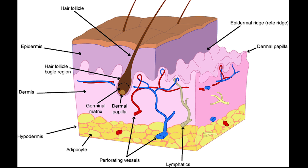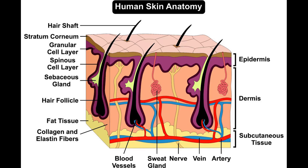The epidermis can be further subdivided into the following strata, or layers, beginning with the outermost: stratum corneum; stratum lucidum, found only in palms and soles; stratum granulosum; stratum spinosum; and stratum basale, also called the stratum germinativum. Keratinocytes in the stratum basale proliferate through mitosis, and the daughter cells move up the strata.